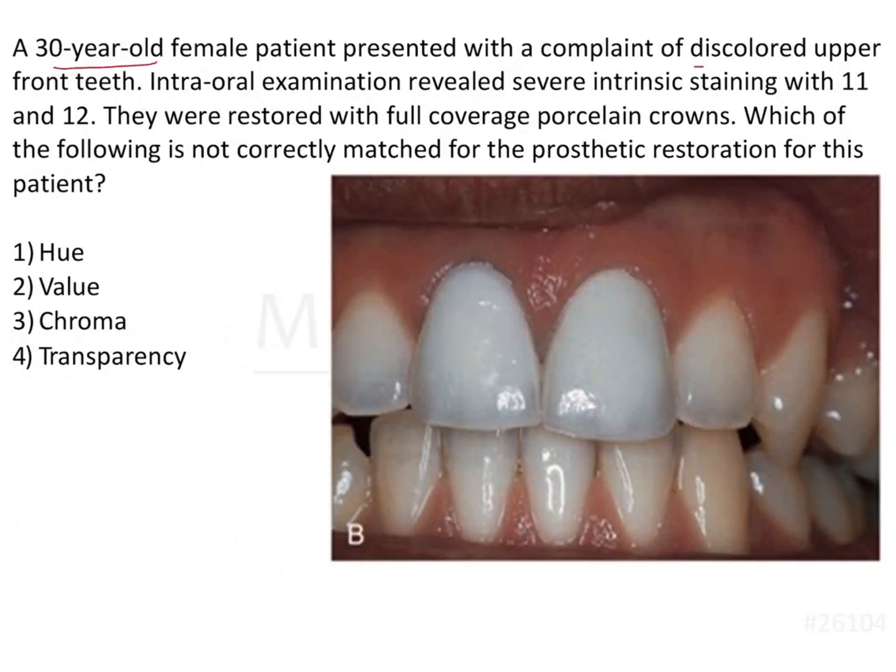A 30-year-old female patient presented with a complaint of discolored upper front teeth. Intraoral examination revealed severe intrinsic staining with 11 and 12. They were restored with full coverage porcelain crowns. Which of the following is not correctly matched for the prosthetic restoration of this patient?